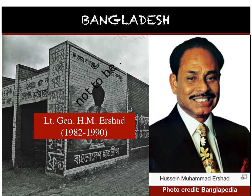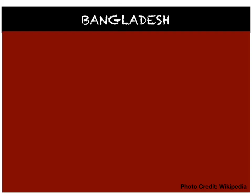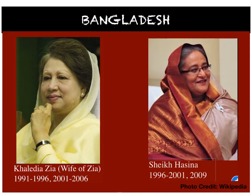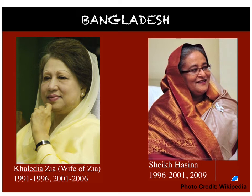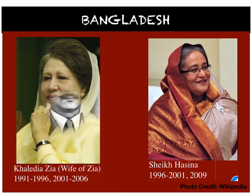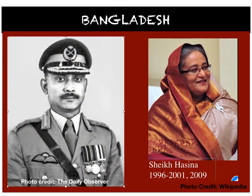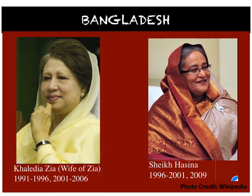Since then, Bangladesh has been a multi-party democracy. In the election of 1991, Khalida Zia won, and from 1991 till 2006, Khalida Zia and Sheikh Hasina ruled Bangladesh alternatively. Khalida Zia served as Prime Minister from 1991 to 1996 and again from 2001 to 2006. She is the wife of Zia Ur Rahman, and was the first woman in the country's history and second in Muslim-majority countries to head a democratic government as Prime Minister.